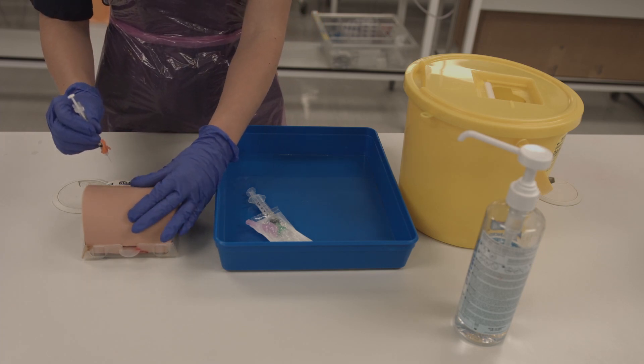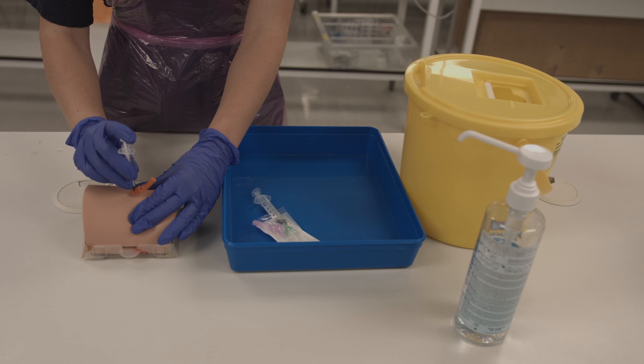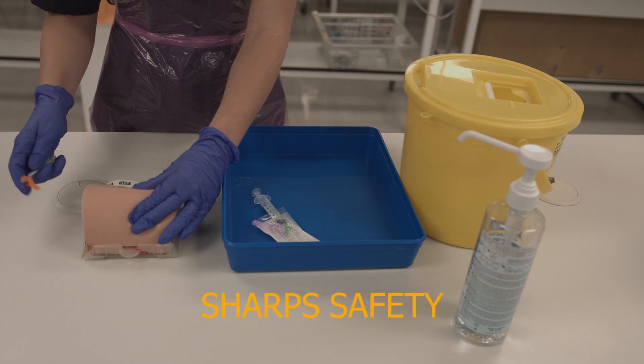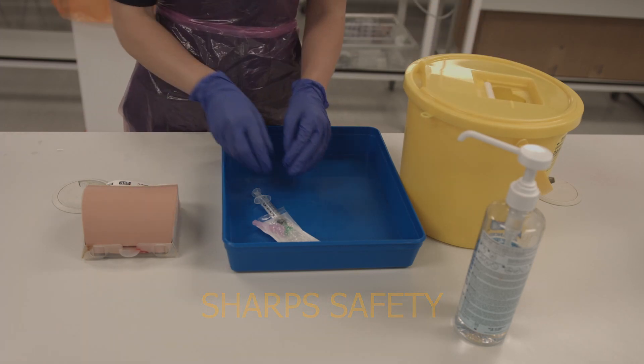You can then pinch up some of the skin and inject at 90 degrees directly into the subcutaneous tissue. Put the safety mechanism over the needle and dispose of it immediately in a sharps bin.